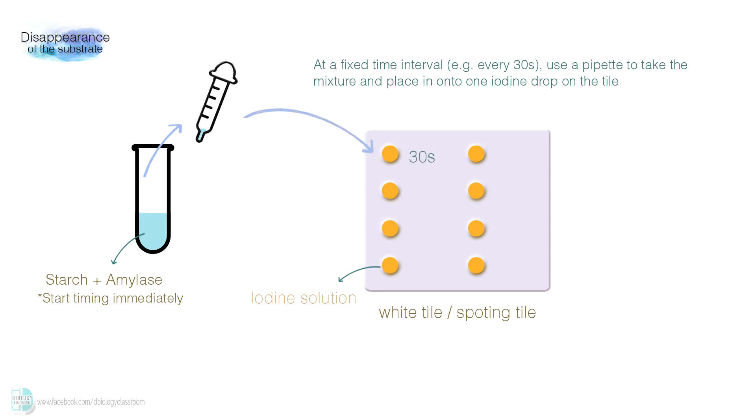In the beginning, you would expect the drop to turn blue-black. As you repeat the process, eventually the iodine drop stops turning blue-black as starch is completely broken down. This is the endpoint of the reaction. The rate of the reaction is one over time of the endpoint.